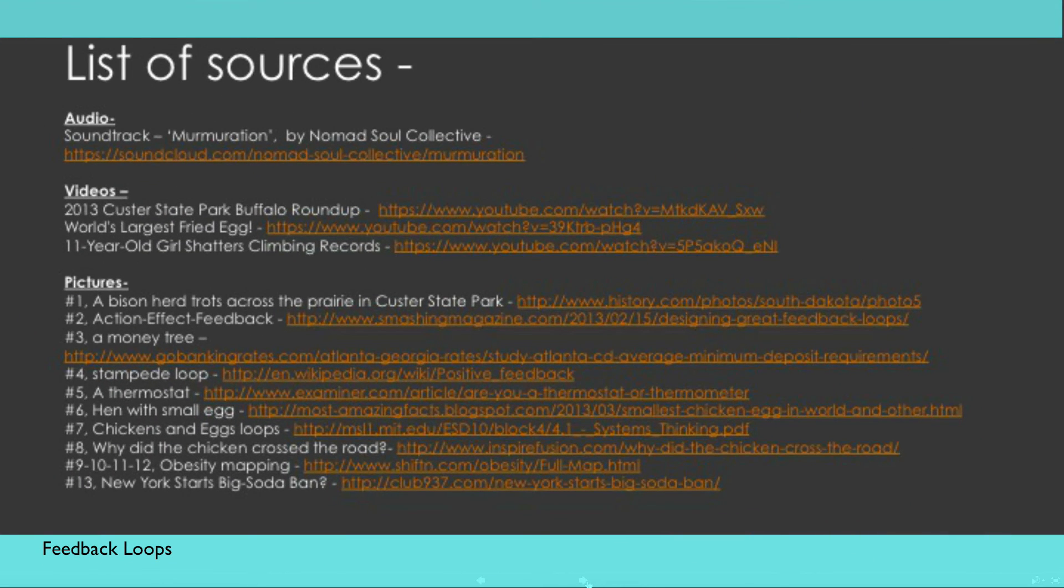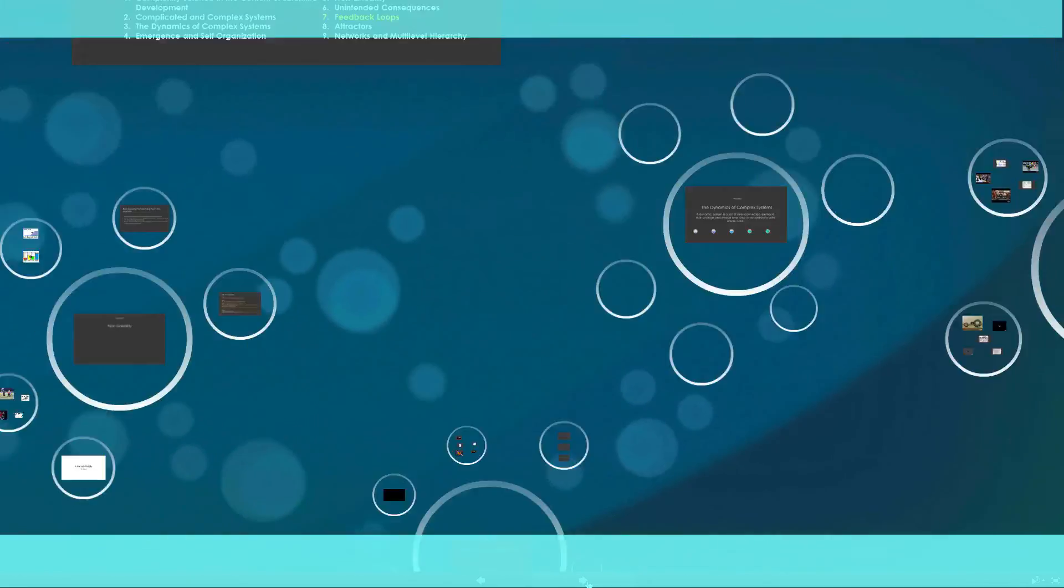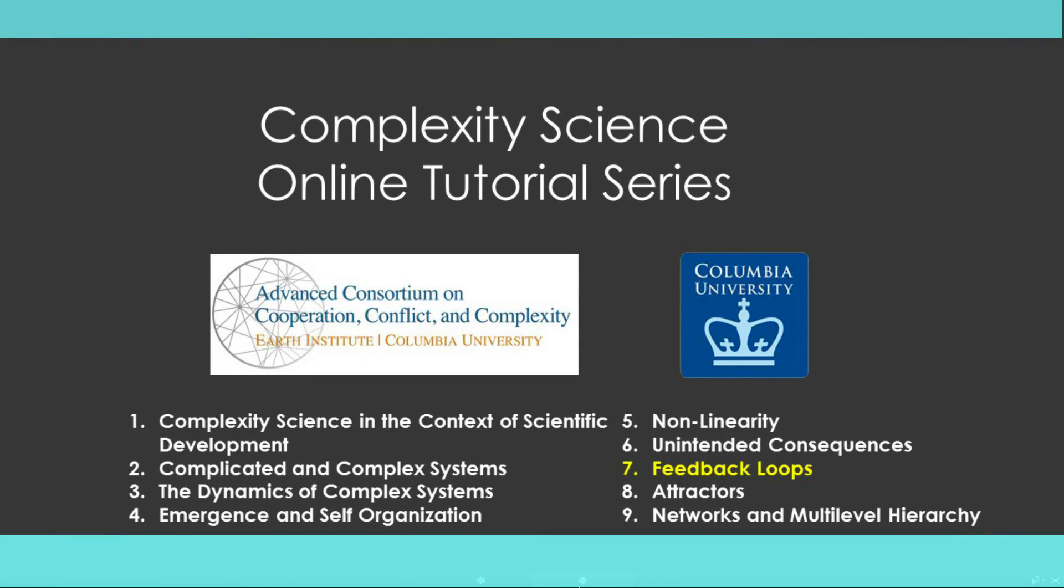These are the online sources that were used to create this module. In the following modules of this series, we will explore more of the unique attributes of complex systems, like attractors, networks and multi-level hierarchies. These concepts will be easier to grasp now, when one has a basic understanding of feedback loop processes. Thank you for watching!